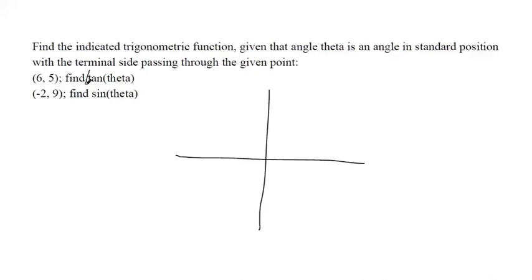We're supposed to find out what this is. Not what theta is, but what tangent of whatever theta is. So we're not going to know what the angle is. We're just supposed to be able to draw a right triangle and say what the opposite over the adjacent is, because that's what tangent is.